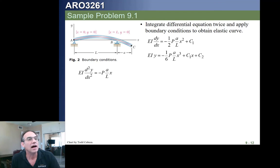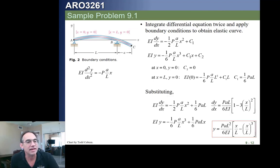We can then integrate that. We get our constants of integration, and then we go and impose our two boundary conditions of Y equals 0. The first time, we find out that C2 is 0. The second time, we find out a different value for C1. And then we plug it in and rearrange, and that's our equation for the elastic curve.